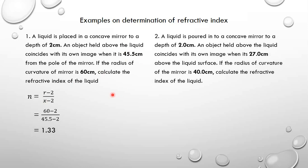Let's look at another example. A liquid is poured into a concave mirror to a depth of 2.0 cm. An object held above the liquid coincides with its own image when it is 27.0 cm above the liquid surface. If the radius of curvature of the mirror is 40.0 cm, calculate the refractive index of the liquid. We are still going to use N equals R minus D over X minus D. However, this time the distance given is already X.